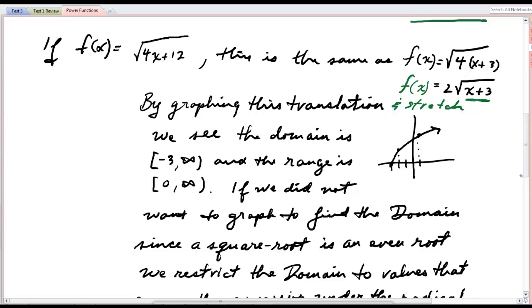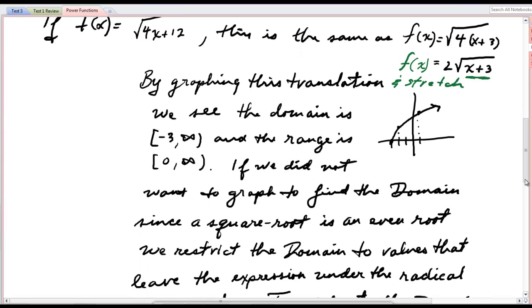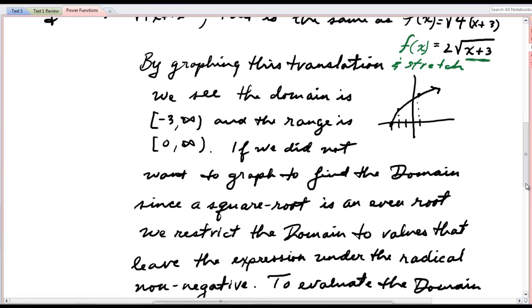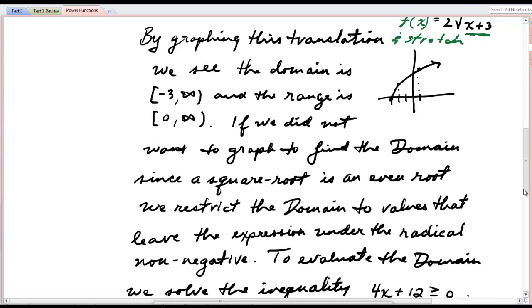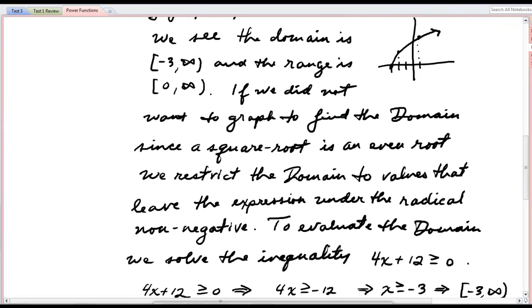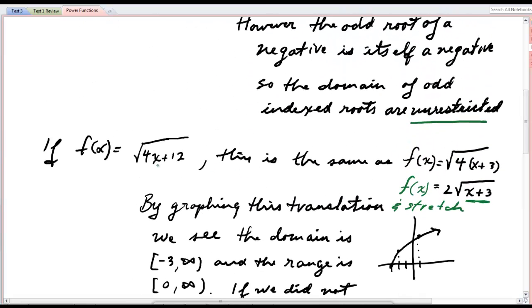If we did not want to graph this, a technique I teach in intermediate algebra and I remind you of at the beginning of the class, is that to find the domain, since a square root is an even root, we can restrict the domain to values that leave the expression under the radical, we call that the argument, non-negative. So to evaluate the domain, we solve the inequality 4x plus 12 is greater than or equal to 0. Where did I get 4x plus 12? That was the argument.